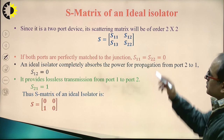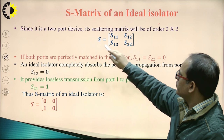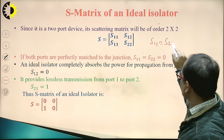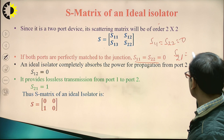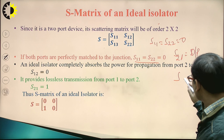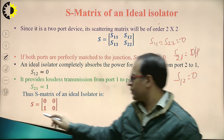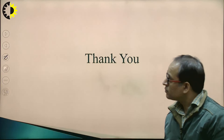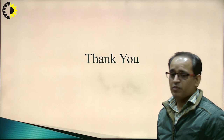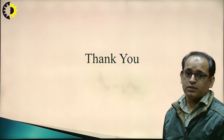The scattering matrix of an ideal isolator is a 2×2 matrix. Since it has matched terminations, S11 = S22 = 0. Since input at port 1 gives output at port 2, S21 = 1. Since input at port 2 gives no output at port 1, S12 = 0. Therefore the S-matrix is [[0, 1], [0, 0]]. The reference for this material is Microwave Devices and Circuits by S.M. Liao.